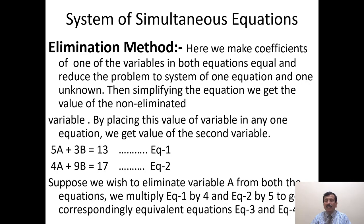By placing this value of the variable in any one equation, we get the value of the second variable. For example: 5A + 3B = 13 is equation 1, 4A + 9B = 17 is equation 2. Suppose we wish to eliminate variable A from both equations. We multiply equation 1 by 4 and equation 2 by 5 to get the corresponding equivalent equations 3 and 4.